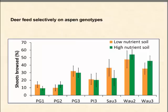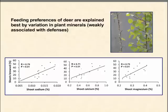Those deer preferences are determined less so by the defense compounds and more strongly by mineral concentrations — specifically sodium, calcium, and magnesium content of shoots — as shown in the correlation plots.